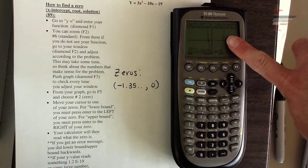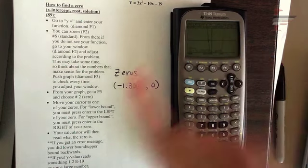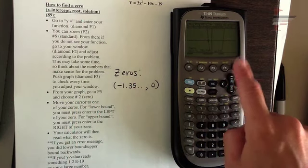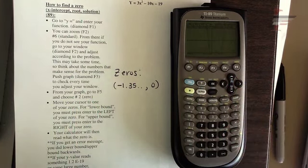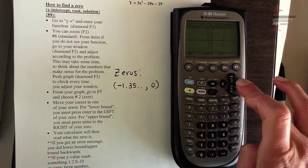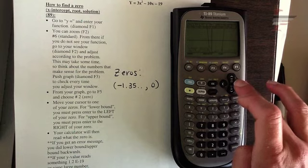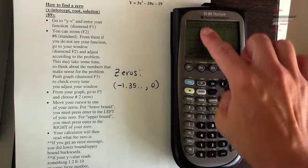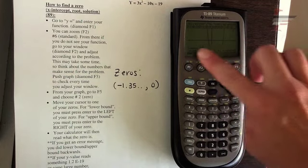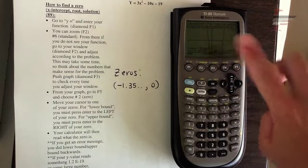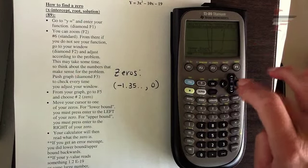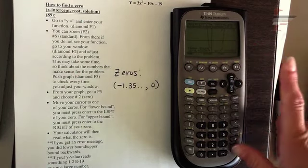Now if you wanted to calculate the other one, you do the same thing. So I go back to F5 for math and then zero. So F5, choose zero. Now I want to go over and get my cursor over to the other zero. And there's my cursor. So now I'm following the flow. So left of it is actually below it for this one. So lower bound is to the left, which is below, press enter. Upper bound is above it. So bring my cursor above that zero and press enter.